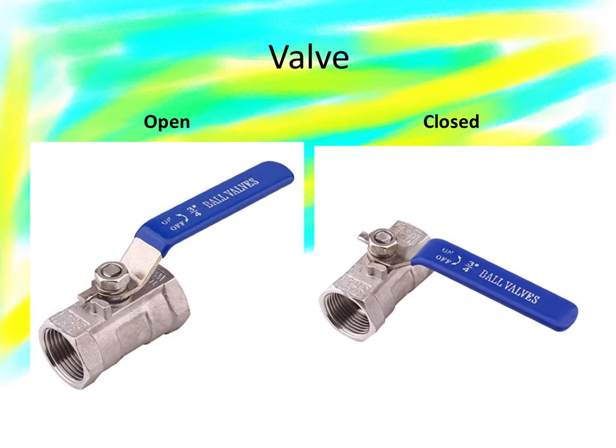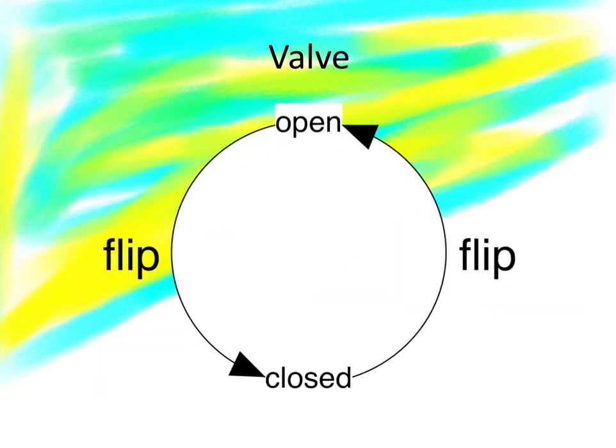A valve can be open or closed, and this shows that the valve has a kind of structure. Open or closed. You can flip it from open to closed, and you can flip it from closed to open. If you flip it twice, you go from open to open, or from closed to closed.